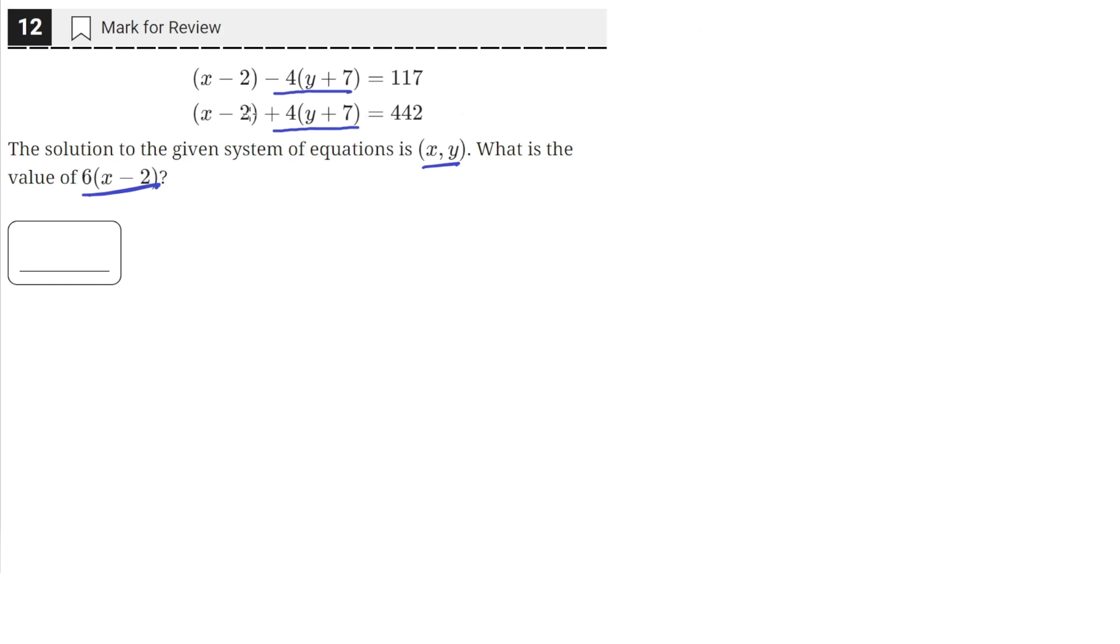So when we add them we'll have two of these since these two quantities here are the same. So we'll just have 2 times x minus 2. These will cancel out because they are opposites of each other.